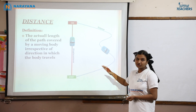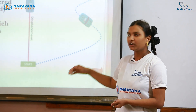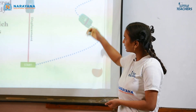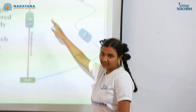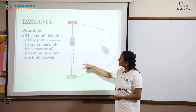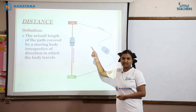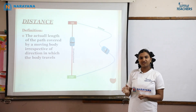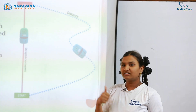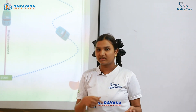Displacement is the shortest distance between the initial point and the final point, and it has a specific direction. So displacement is the shortest distance, and distance is the actual length. Displacement gives a better understanding about distance.